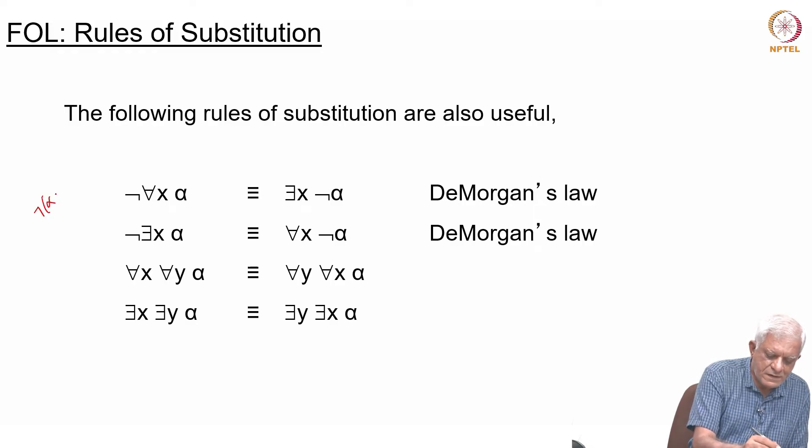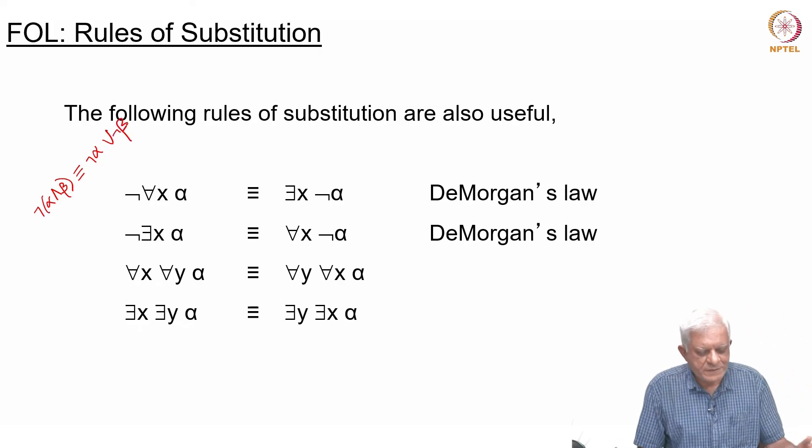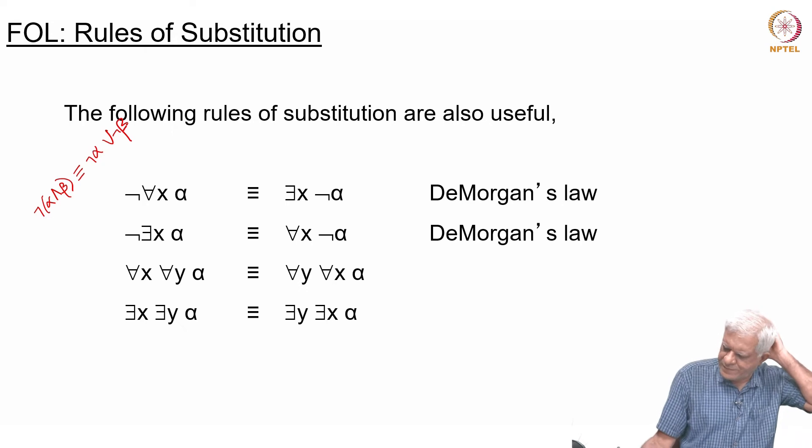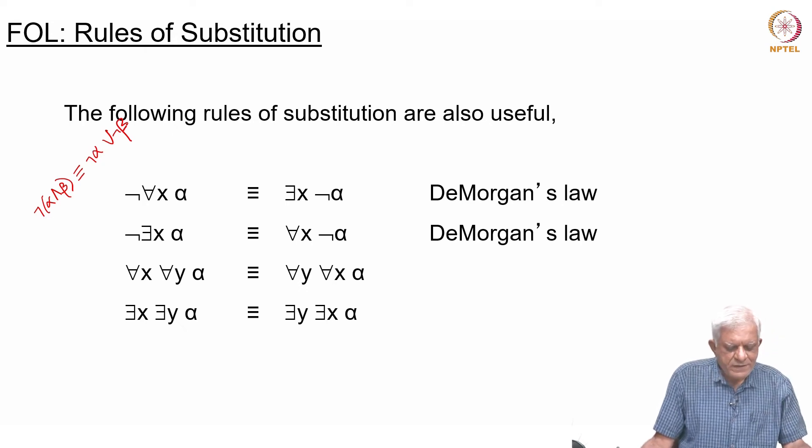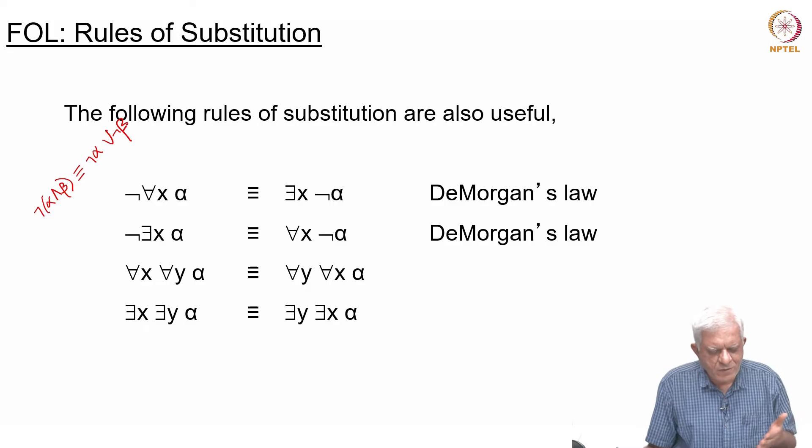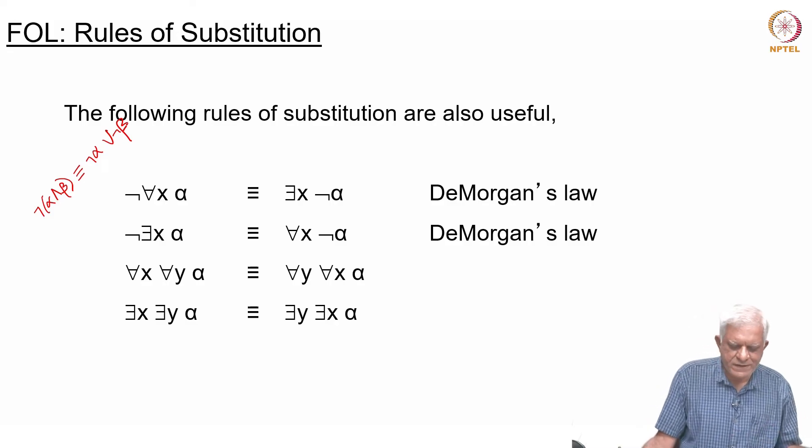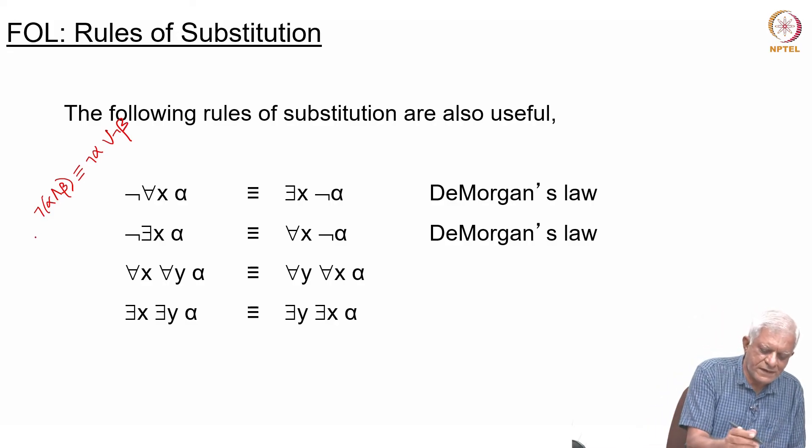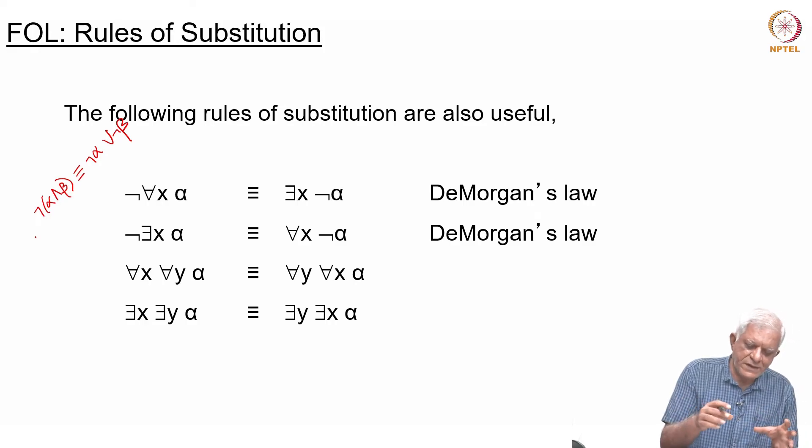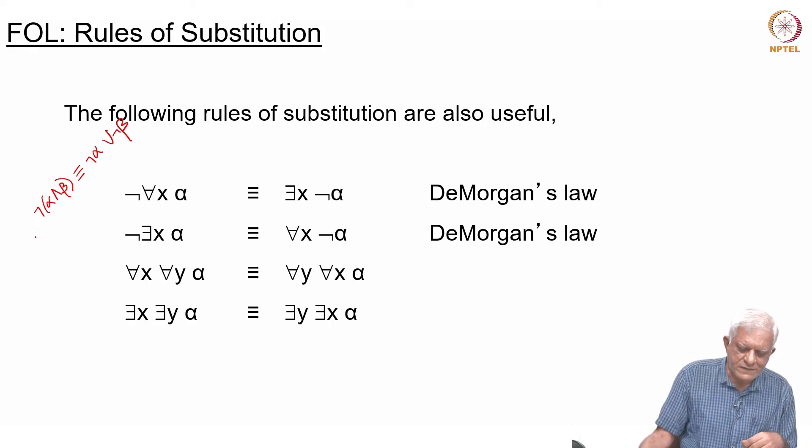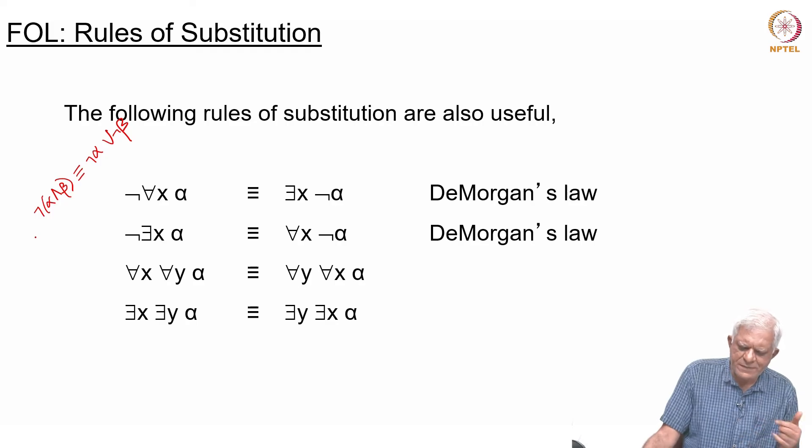Not (alpha and beta) is equivalent to (not alpha) or (not beta). If you remember this law from propositional logic: what do we do in De Morgan's law? We push this NOT somewhere inside. When you push this NOT inside the bracket, then it distributes over the constituents, but it flips the sign of the connective essentially.